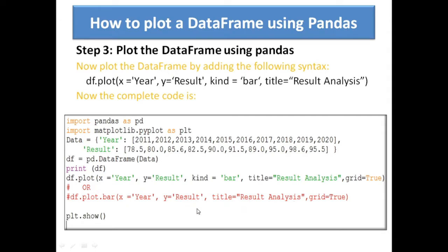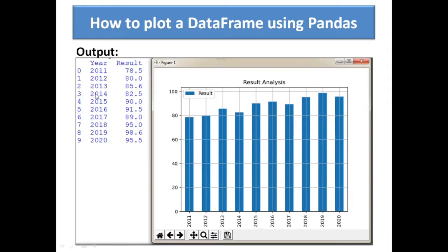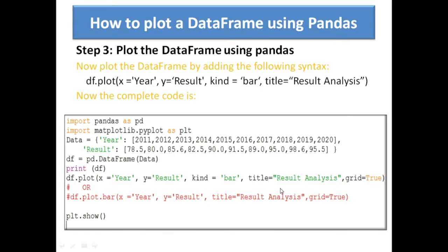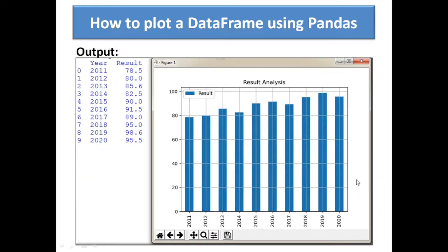So let us see the output. This is your DataFrame created — year and all these values. This is the first column of the DataFrame, this is the second column. The index is 0, 1, 2, 3, 4, 5 — default index has been used. So this is your bar chart drawn. The title 'result analysis' whatever you have given is displayed. Grid is given so grid lines — vertical and horizontal — are displayed here. The legend automatically comes here as well.